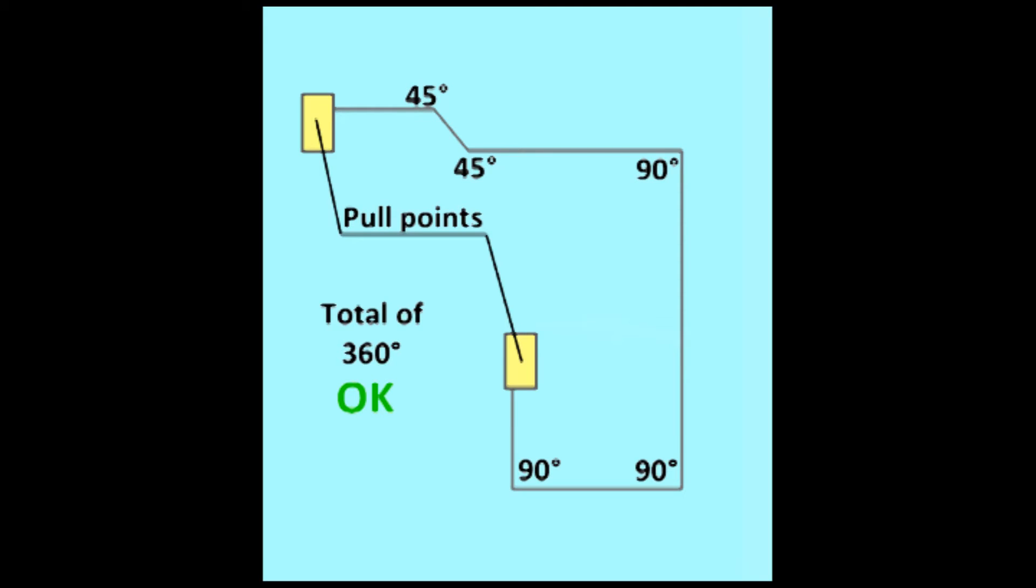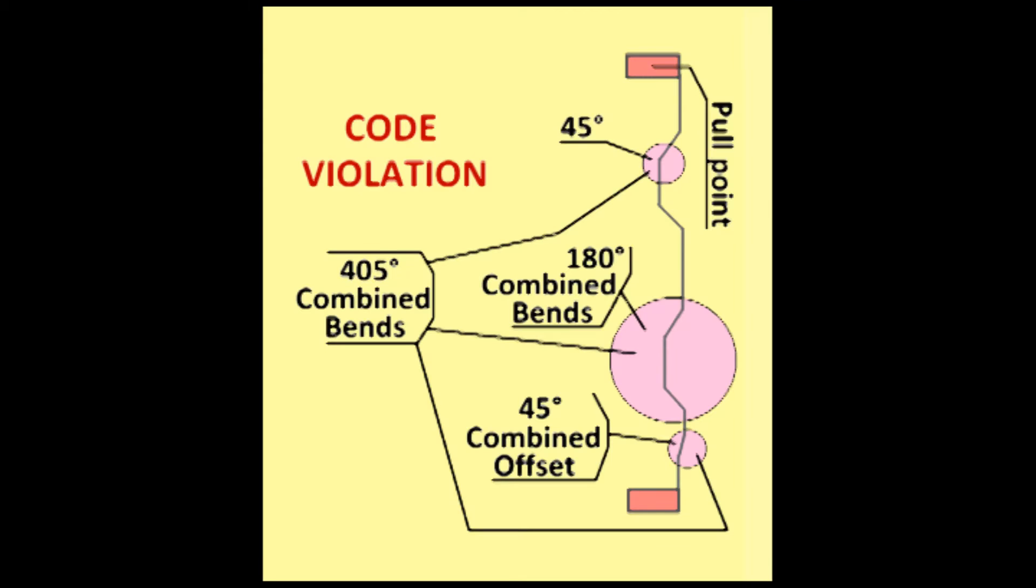Looking at this diagram, you see a 45 degree offset, followed by three quarter bends, for a total of 360 degrees of bends. This is within code. In the next diagram, we have a series of bends that would appear to be within code.